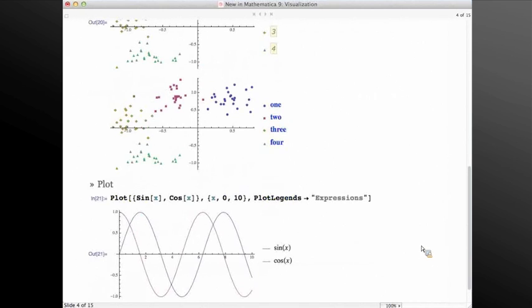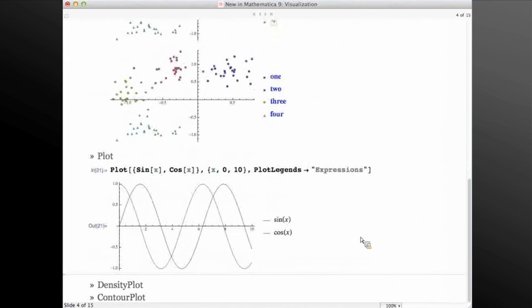Now we're going to look at plot, and the main feature that we're going to look at here is the addition of a special value for plot legends, which is called expressions, in which case the legend is going to look at the functions that were passed into plot, and automatically creates the legend text from that using the mathematical traditional form of those functions.